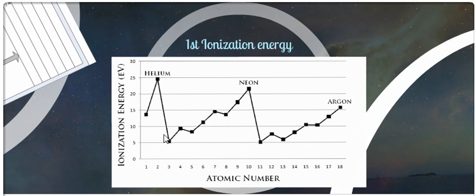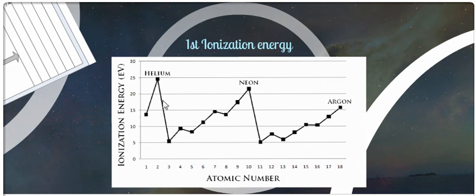As you move from left to right across the periodic table, first ionization energy increases. As you move down the periodic table, there's a decrease in ionization energy because those electrons are further from the nucleus and have more energy to begin with. It doesn't take nearly as much to pull electrons that are far from the nucleus as it does to pull electrons that are really, really close — like fluorine, which has a very high ionization energy.